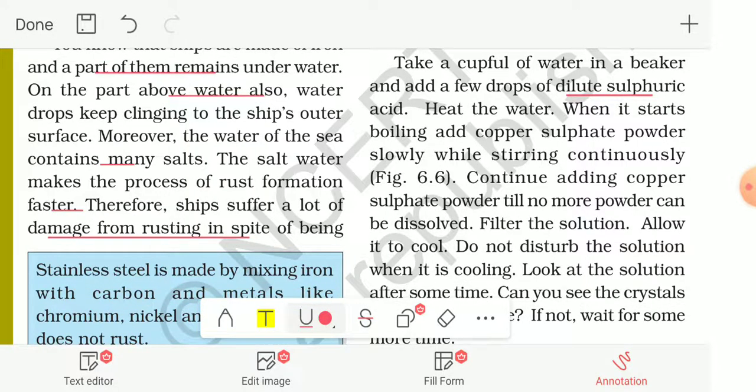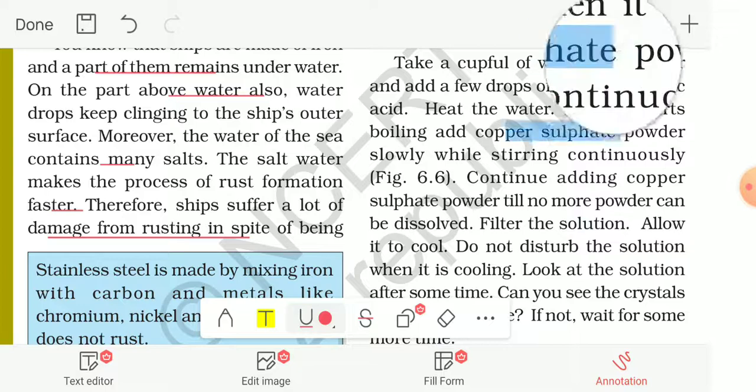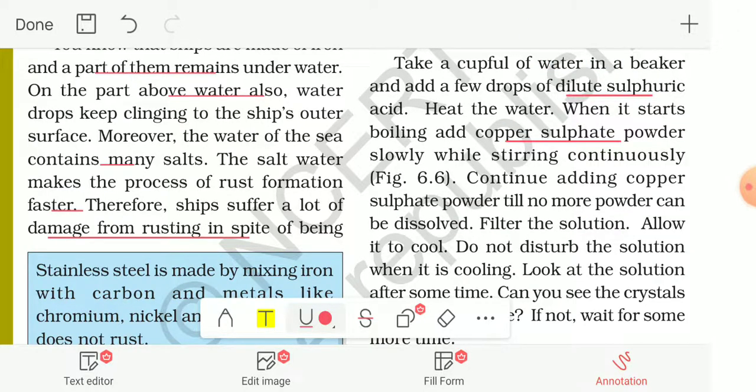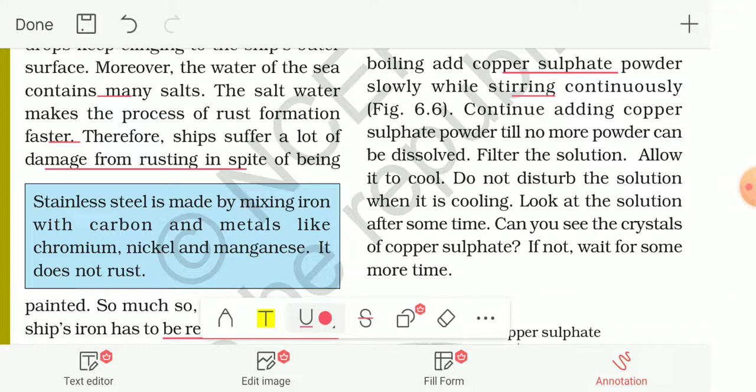When it starts boiling, add copper sulfate powder slowly while stirring continuously. Continue adding copper sulfate powder till no more powder can be dissolved.